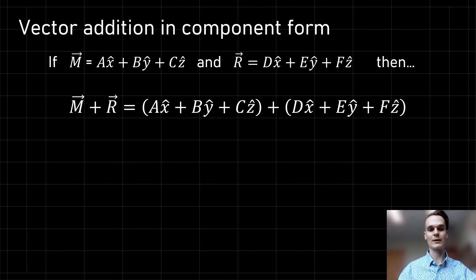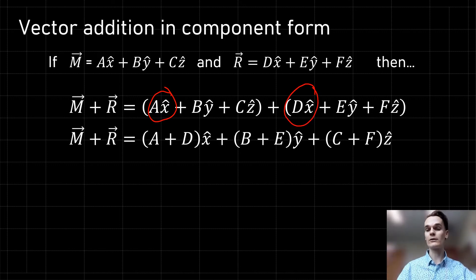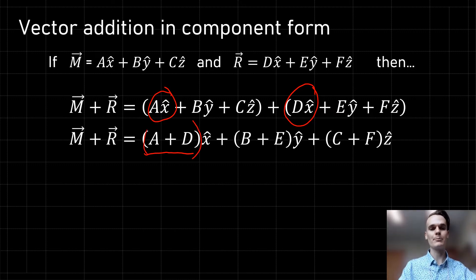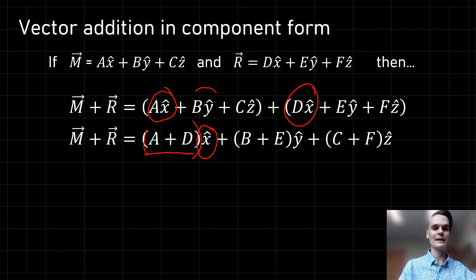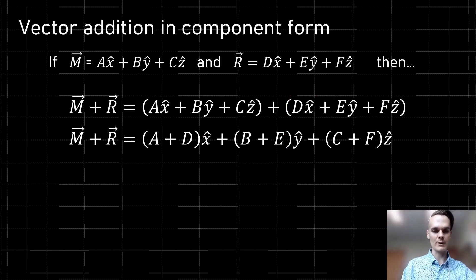How do we do this in component form? We combine like terms. In our original expression, we had a x-hat plus d x-hat. We rewrite this as (a + d) multiplied by x-hat. The same applies to the other vector components: b y-hat plus e y-hat becomes (b + e) multiplied by y-hat. Let's apply this to a real example using numbers.